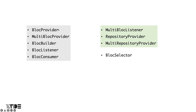Among the widgets provided by Flutter bloc up to this point, we have covered bloc provider, multi bloc provider, bloc builder, bloc listener, and bloc consumer in the examples. The widgets we haven't covered yet include multi bloc listener, repository provider, and multi repository provider. Multi bloc listener, repository provider, and multi repository provider will be covered in later apps.